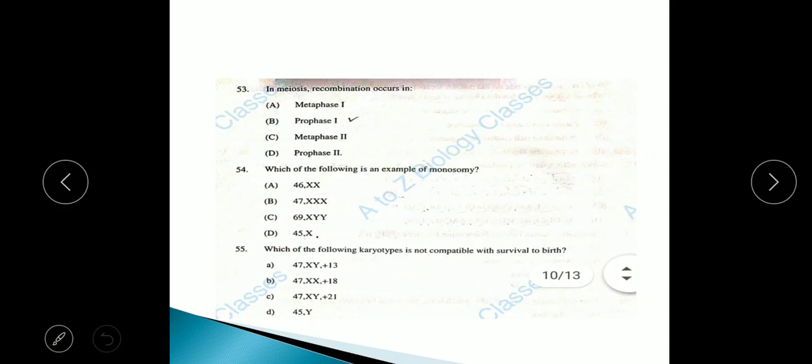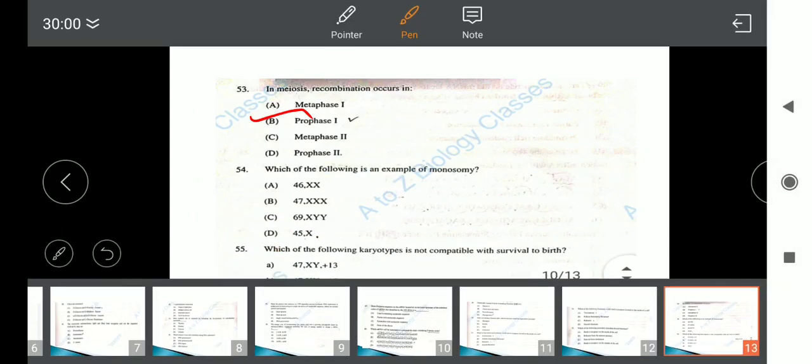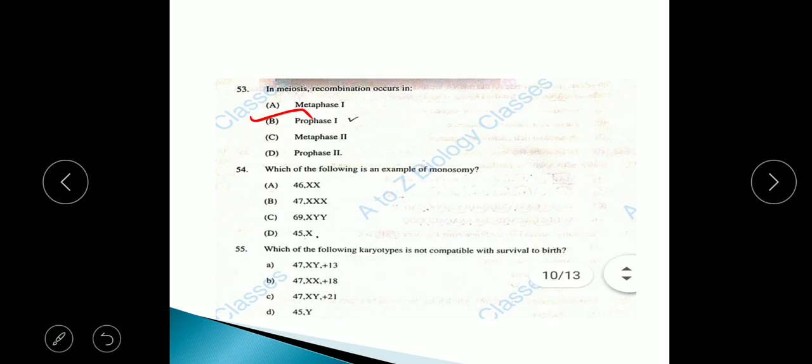Question 53: In meiosis, recombination occurs in prophase 1, option B will be correct answer. Question 54: Which of the following is an example of monosomy? The correct answer is option D, 45X.